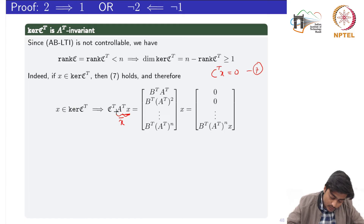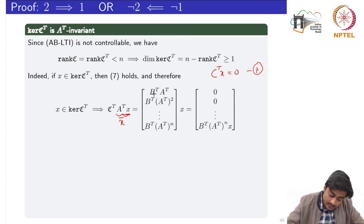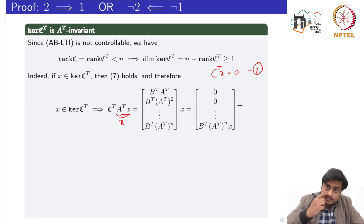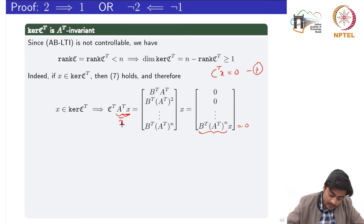Computing C-transpose times (A-transpose x): multiplying A-transpose x into each block gives B-transpose A-transpose x, B-transpose (A-transpose)^2 x, and so on, with the power of A-transpose increasing by 1 in each block. All terms except the last — involving (A-transpose)^n x — are already zero from the earlier computation. We only need to show this last term is also zero; if so, then C-transpose (A-transpose x) equals 0, confirming the subspace is A-transpose invariant.